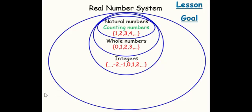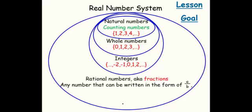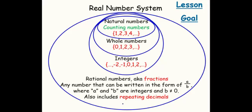In this unit, we will be working with rational numbers. Remember, rational numbers are any number that we can write in the form of a over b, where a and b are integers and b does not equal zero. This also includes repeating decimals and terminating decimals.